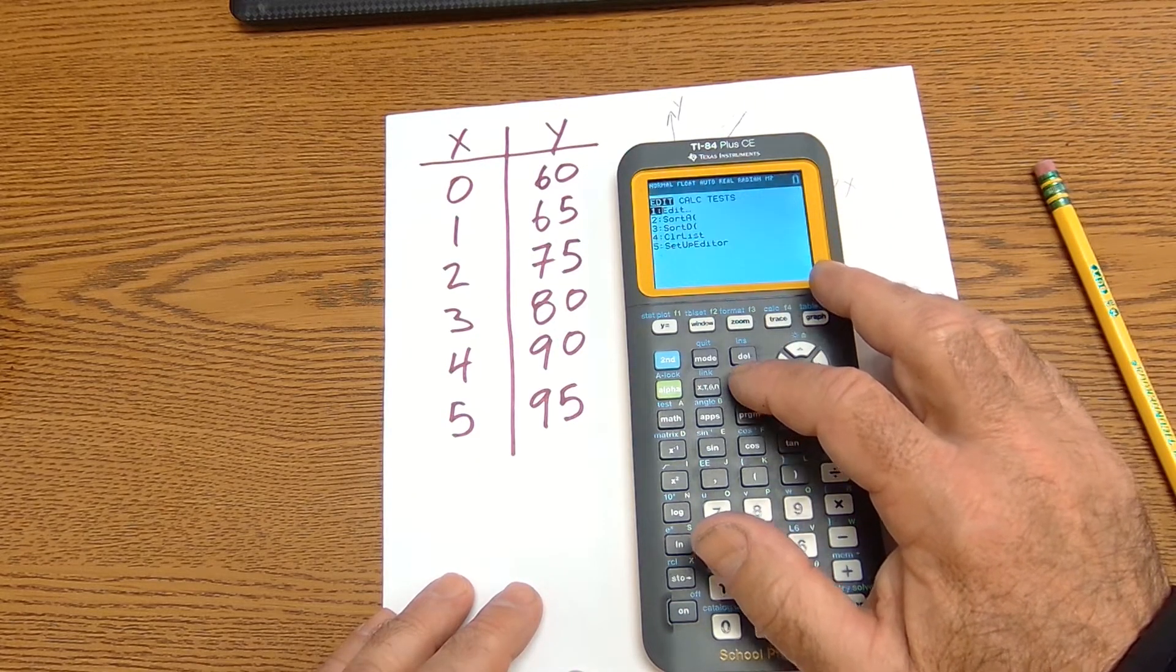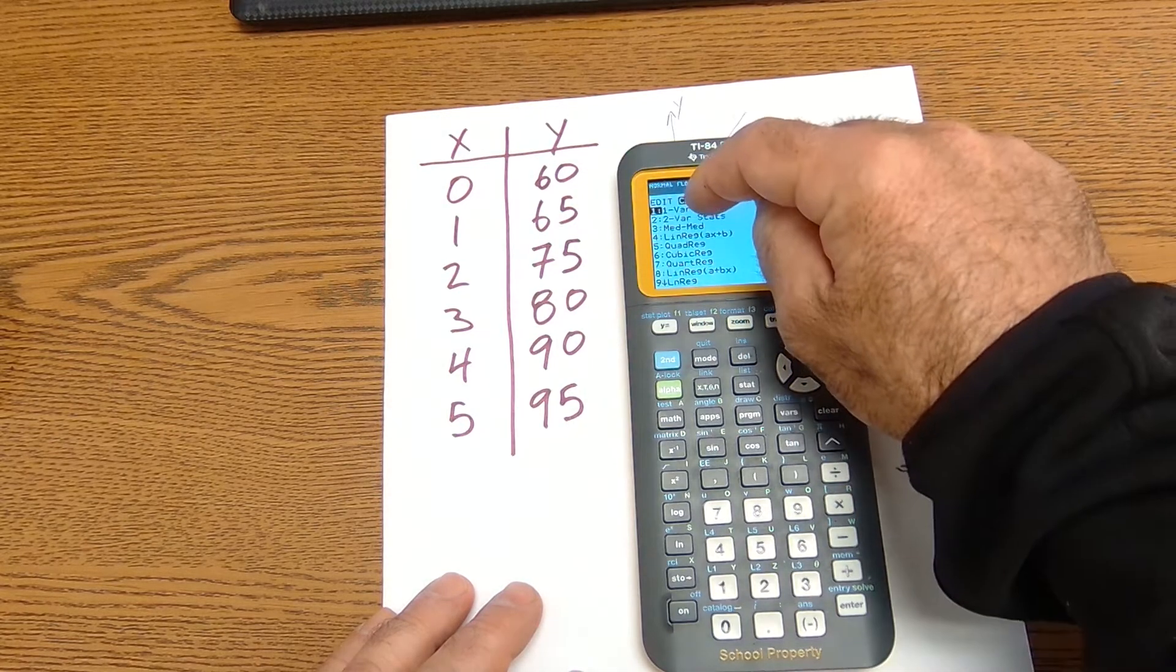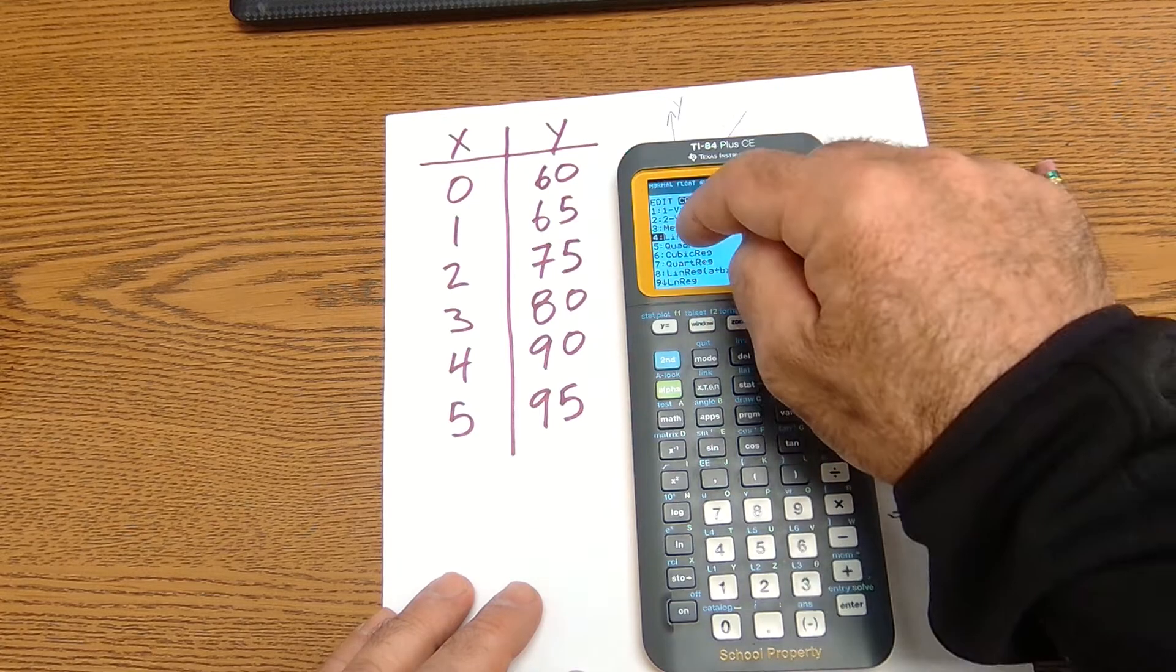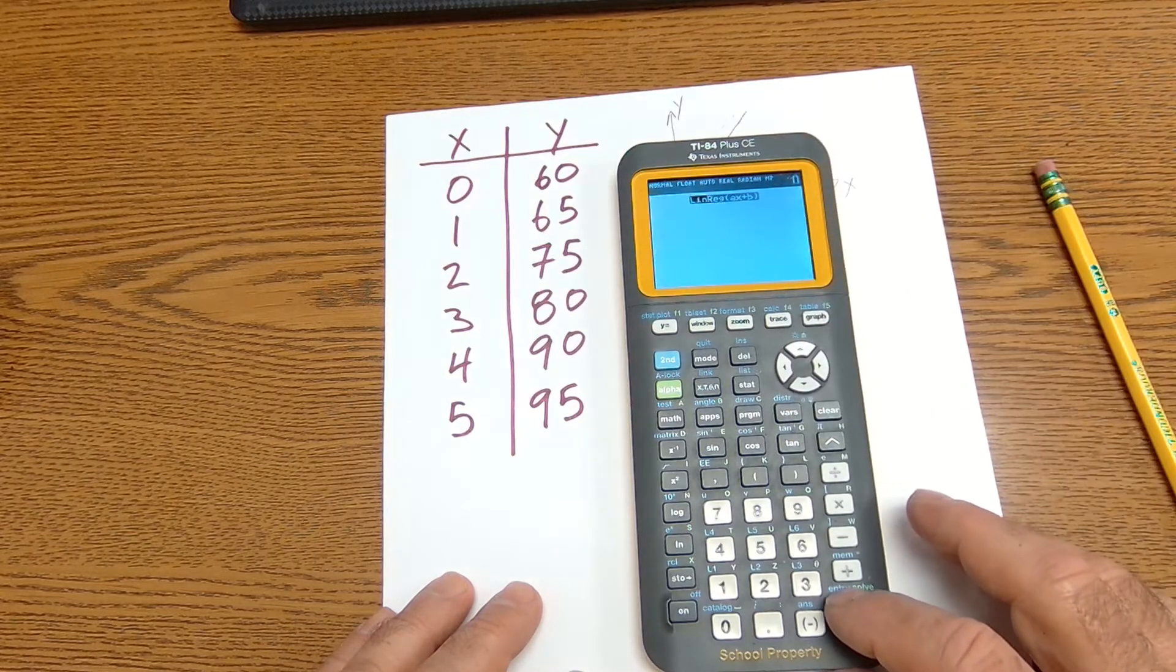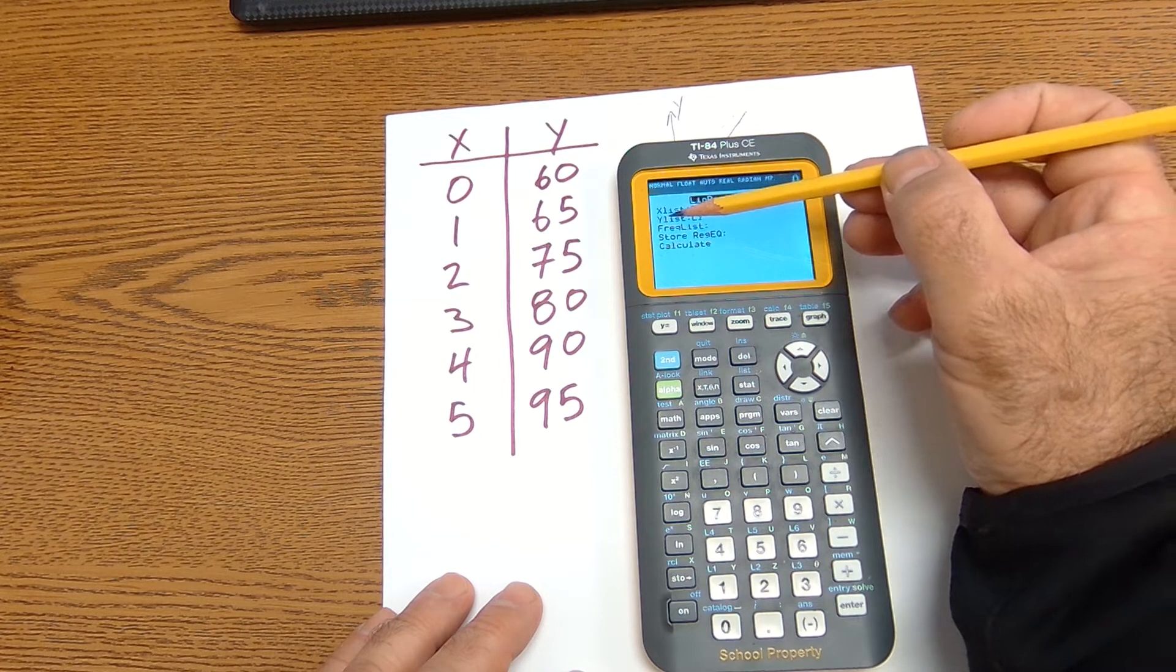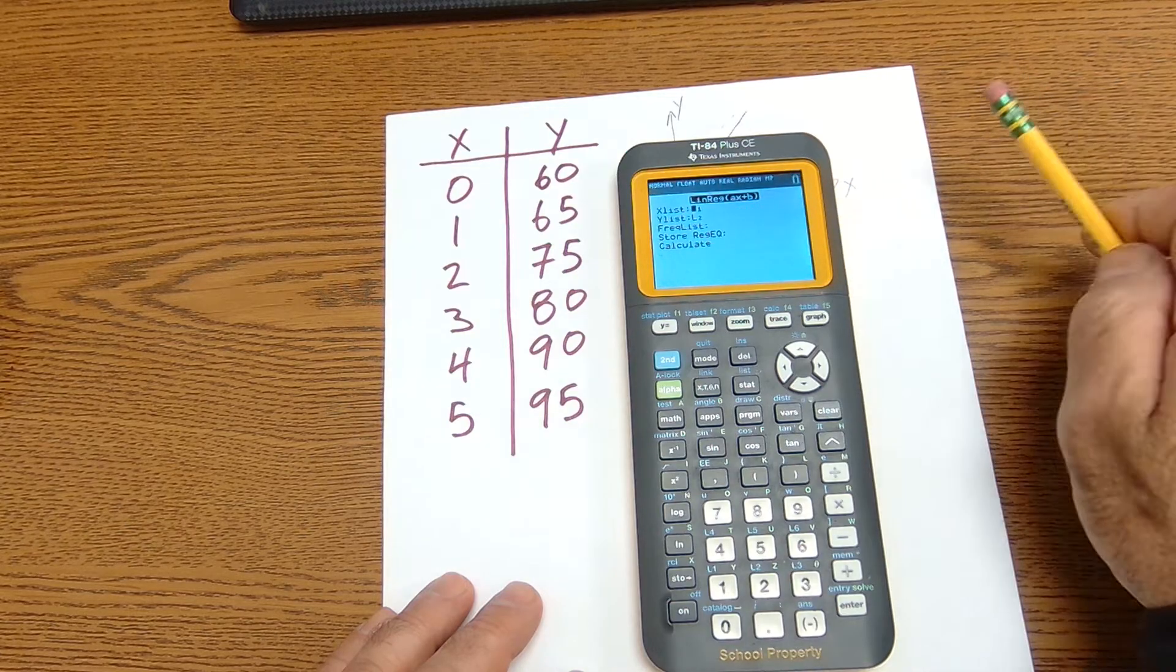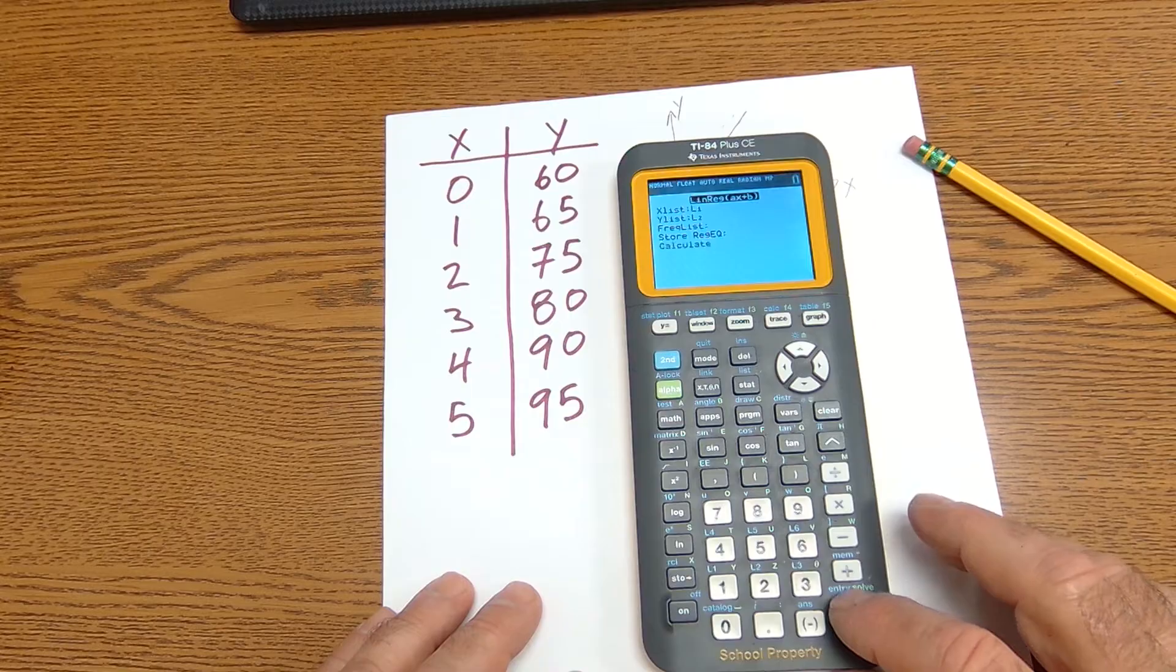Now that I have my data entered, I go back to stat. I am going to run a calculation. So once calc is highlighted, I could run different types of regressions. I specifically want to run a linear regression. So I select linear regression, enter. It is saying list one. My independent variable is list one. My dependent variable is list two. There is no frequency. You could store it. But we're just going to go down to calculate, and I hit enter.